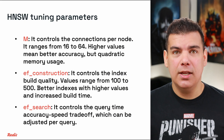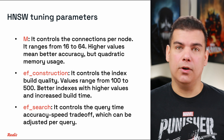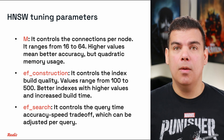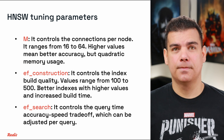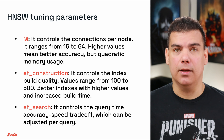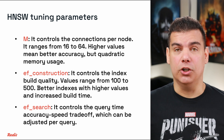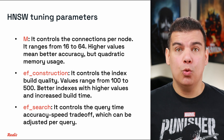Now let's talk about how to tune your indexes. Index tuning parameters are configuration settings that control how vector indexes are built and searched. These parameters create explicit trade-offs between resource usage, search speed, and result quality. For HNSW indexes, the key parameters are: M, which controls connections per node (typically ranging from 16 to 64 — higher values improve recall but increase memory usage quadratically); EF construction, which controls index build quality (ranging from 100 to 500 — higher values create better indexes but increase build time); and EF search, which controls the query-time accuracy/speed trade-off and can be adjusted per query.